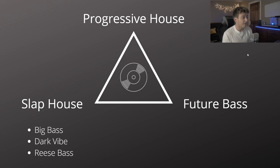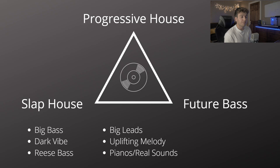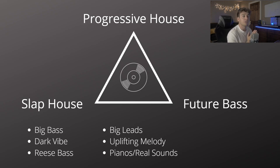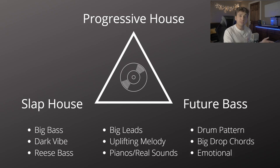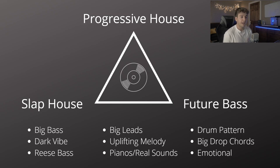For Slap House, we have a big bass, a really dark vibe, and a lot of the intros are generally re-spaced. Progressive House is going to have a lot of big leads, uplifting melodies, and generally there's also a lot of real instruments like pianos and strings used as well. Future Bass has a drum pattern, big detuned saw drop chords, and they're usually pretty emotional as well.